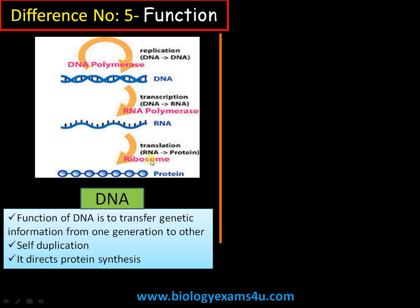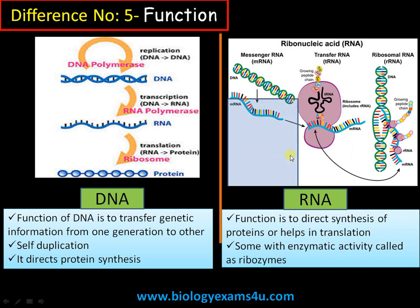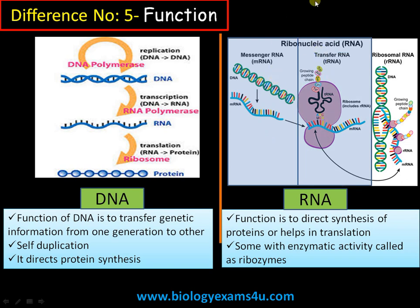RNA's function is to direct protein synthesis. First, mRNA — messenger RNA — is formed during transcription, where a DNA template strand is converted to mRNA; that process is called transcription. Next, the codons are recognized by the anticodons of tRNA. tRNA acts as an adapter molecule with amino acids at one end, and sequentially adds amino acids during protein synthesis.